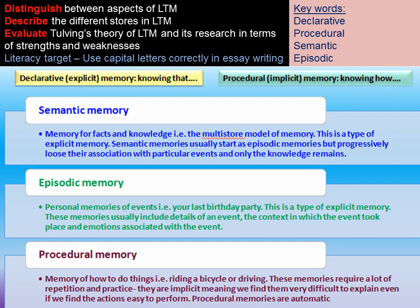Tulving argues that our semantic memory is our memory for facts and knowledge, and that these memories will lose their association with particular events — only the knowledge will remain. For example, you know that Paris is the capital of France, but you don't know why you know this; you can't remember when you learned it, but you know that it's a memory that you have.